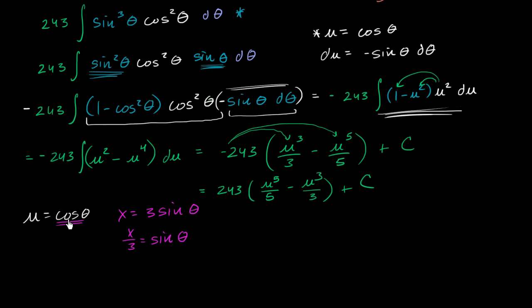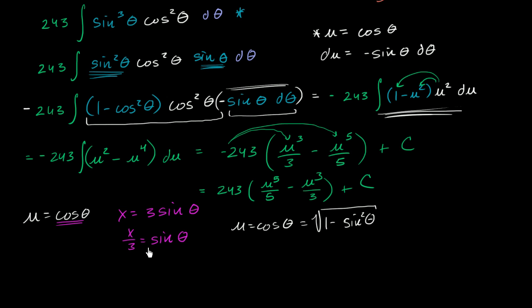I'll show you two techniques for doing this. The first is to use the fundamental trig identity: cosine theta equals the square root of 1 minus sine squared theta. Since sine theta equals x over 3, we get u equals the square root of 1 minus (x over 3) squared. That gives us u in terms of x, so everywhere we see u we can replace it with this expression, and we're essentially done.